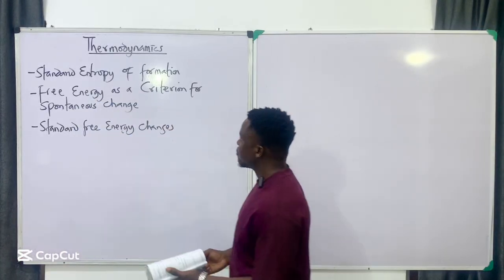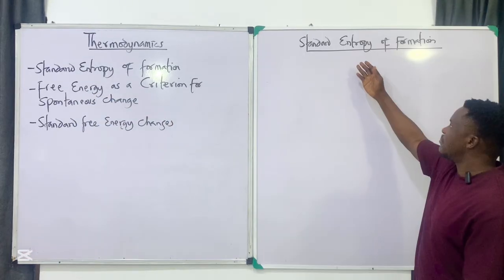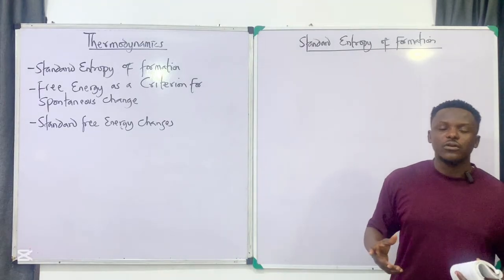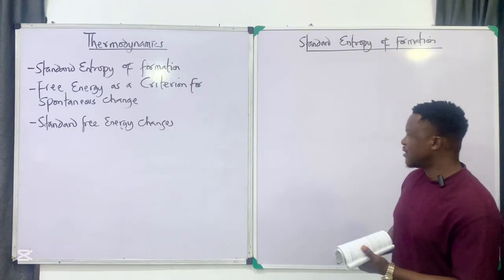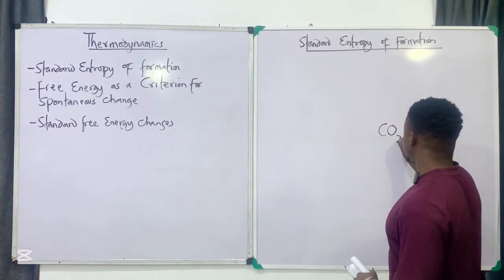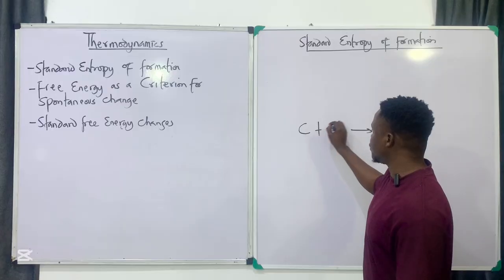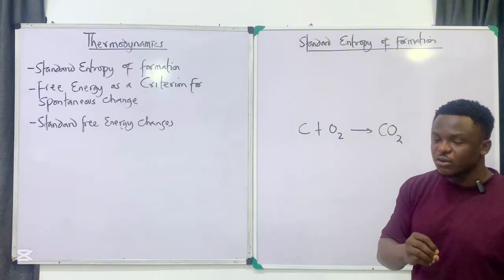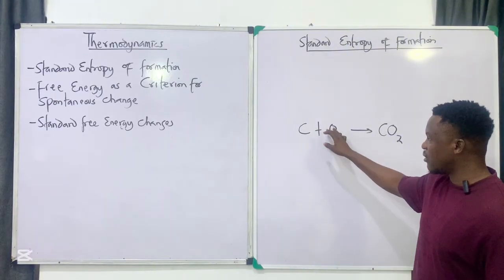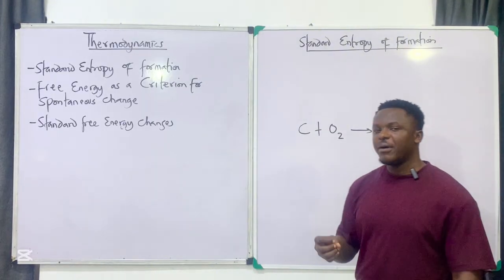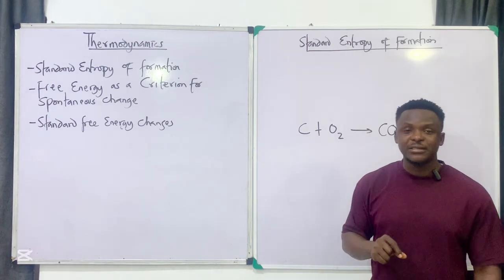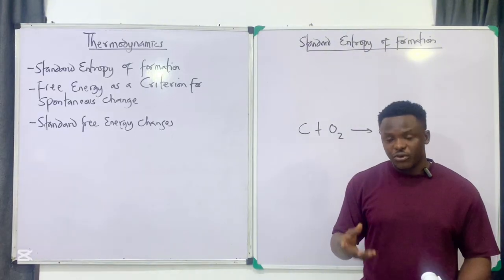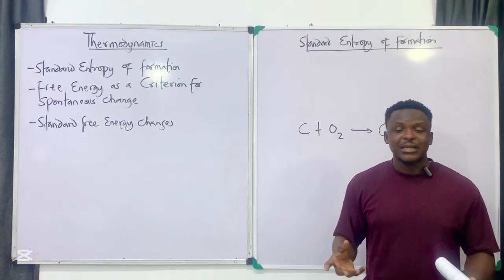We want to look at three topics. Starting with the first: what is meant by standard entropy of formation? Formation is basically the production of one mole of a substance from its constituent elements. For example, CO₂ is formed from C plus O₂. Anytime a compound is formed from its constituent elements, that is a formation reaction. The entropy that accompanies such reactions is called standard entropy of formation.